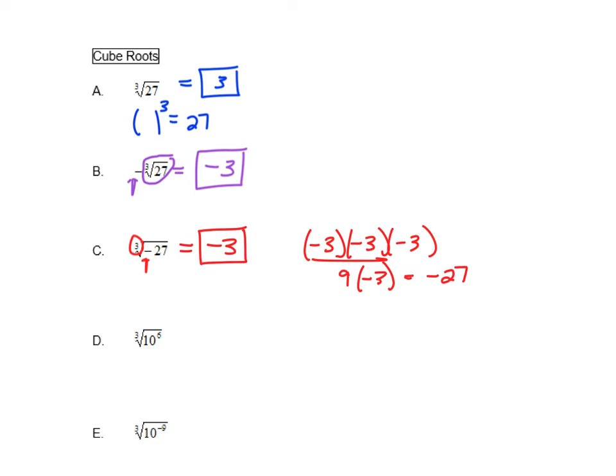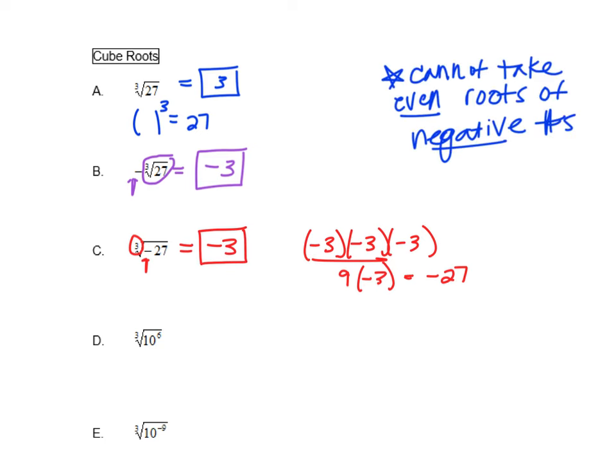As we get into taking different roots of numbers, if the root you're taking is even — a square root is the same as a second root, the fourth root, the sixth root — you cannot take even roots of negative numbers. That's a good thing to jot down in your notes: you cannot take even roots of negative numbers.